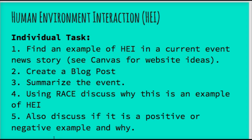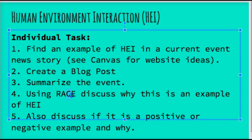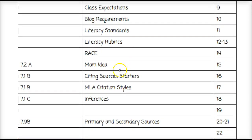You have an individual assignment: find an example of HEI in a current event or news story. Canvas has some ideas on that content page where you found the video, or you can use other websites. You're going to create a blog post summarizing the event, use RACE to discuss why it is an example of HEI, and discuss if it is a positive or negative example and why. Your RACE sheet is on page 14 in your ISN and your citing sources starters is on page 16 — use these to cite sources using complete sentences.